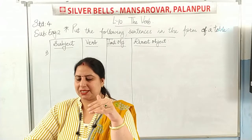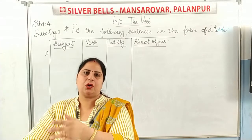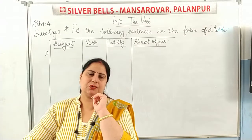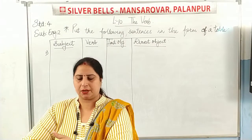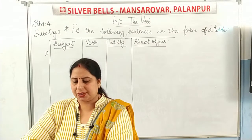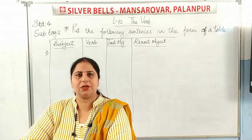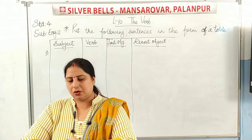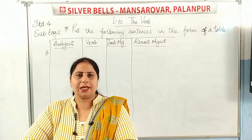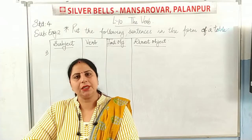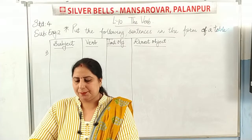When we form a sentence, it has a subject and a verb, but along with the verb, a direct object is also necessary — what the verb is talking about. And an object is of two types: one is the indirect object and one is the direct object.